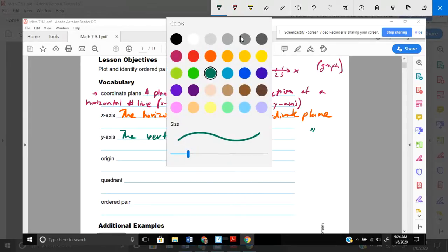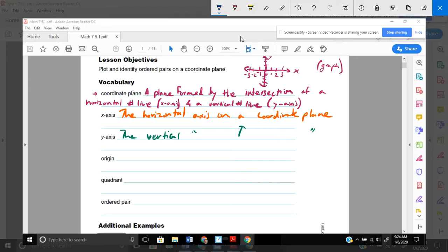Next up, we have the term origin. And origin is the point where the x and y-axis meet or intersect. Point where the x and y-axis intercept. And the actual origin itself is located at 0, 0. If I were looking at mine that I made up here, it's kind of sloppy, but 0, 0 is right there. It's where the x and y-axis meet. That's the origin.